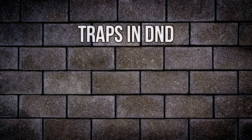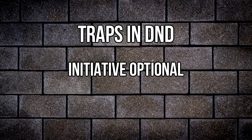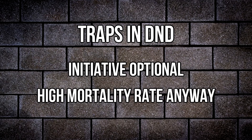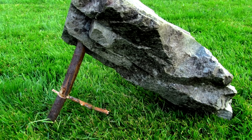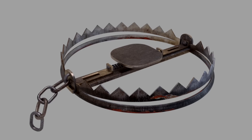Speaking of which, traps in D&D are pretty much anything that doesn't roll initiative but can kill you. Some of the most classic examples include arrow slits, falling rocks, bear traps, and the final boss.